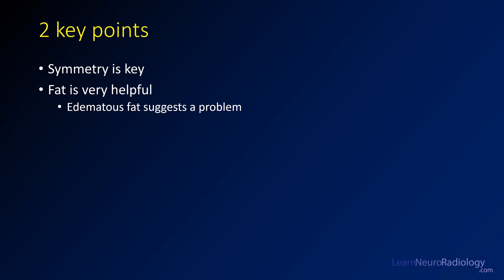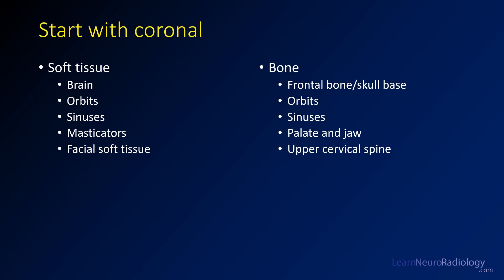Two key points: symmetry from left to right is really helpful — that's why coronal and axial are more useful than sagittal. Fat is also super helpful; if you see nice clean fat, you probably don't have too much of a problem. Start with the coronal and begin with the soft tissues, working your way down: brain, orbits, sinuses, masticator space, parapharyngeal space, and facial soft tissues. Then repeat that with bone, going through the orbits, sinuses, palate, jaw, and upper cervical spine in the same order.